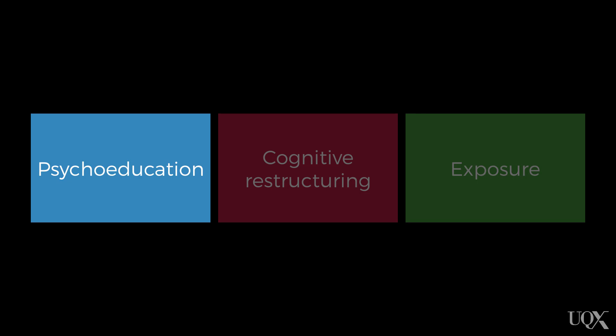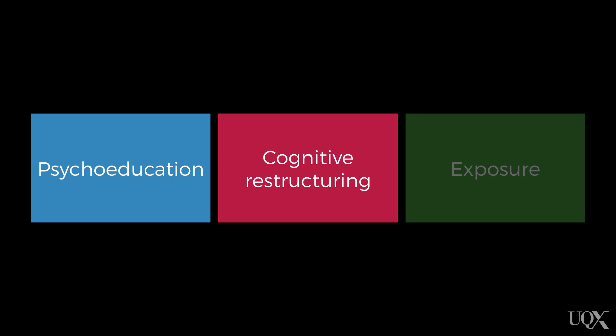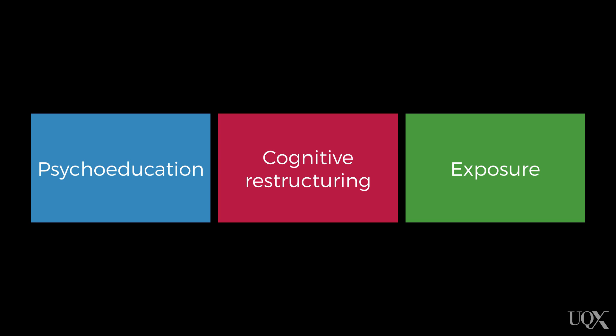Medication is certainly an option, but it's not the front line intervention. Some of the key strategies within a cognitive behavioural framework include psychoeducation about anxiety, cognitive restructuring and exposure. These strategies tend to be used in conjunction rather than entirely separate from one another.